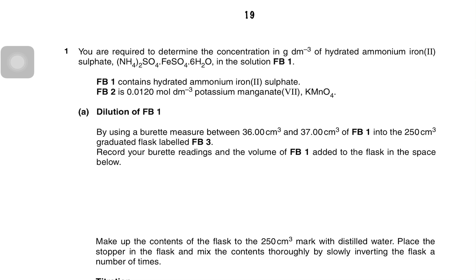You are required to determine the concentration in grams per decimetre cube of hydrated ammonium iron(II) sulfate in solution FB1. FB1 contains hydrated ammonium iron(II) sulfate. FB2 is 0.0120 mol per dm³ potassium manganate. Reminder that potassium manganate is a strong oxidising agent, so what we are doing right now is a redox titration.